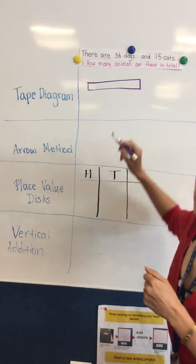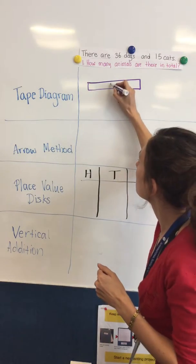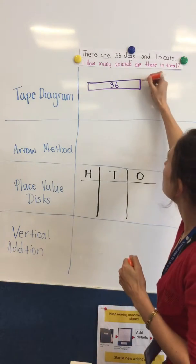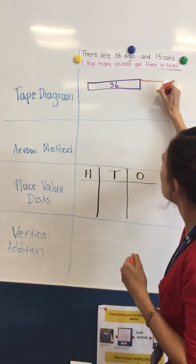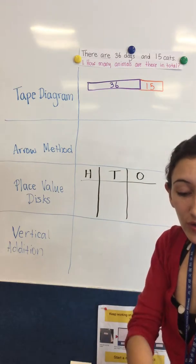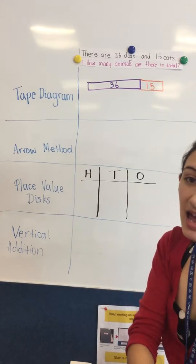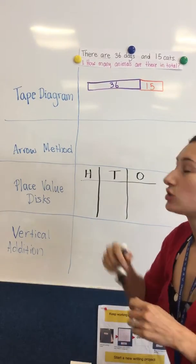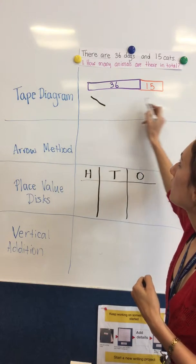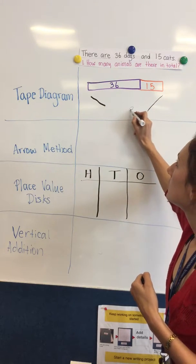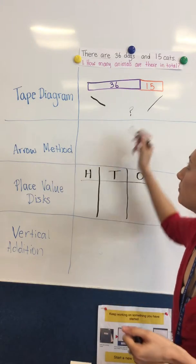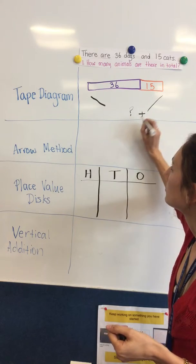So I would show 36 dogs as one piece of tape and then 15 cats as another piece of tape. I know that the question is asking me how many are there all together, so I know by putting those together I need to do an addition problem.